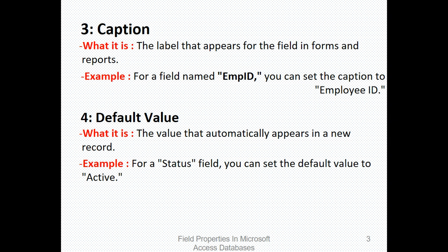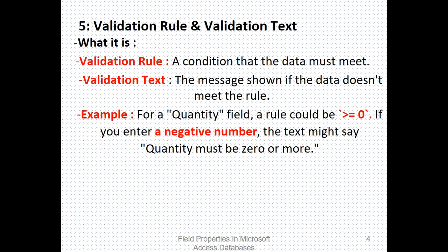For example, for a status field, you can set the default value to active. Whenever you enter a new field, instead of leaving it blank, it will type the word 'active'. You can then write inactive or choose inactive. Default value is the value that automatically appears in a record.